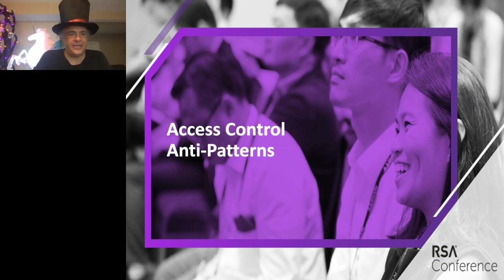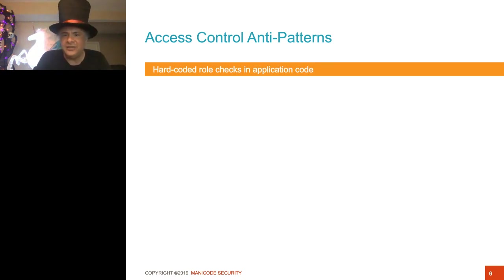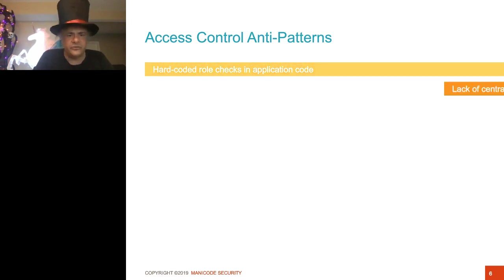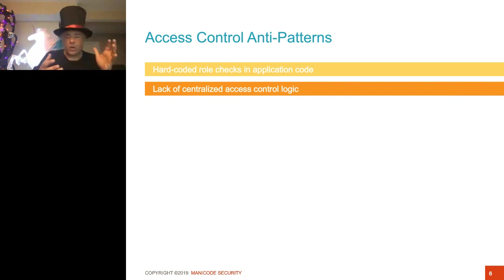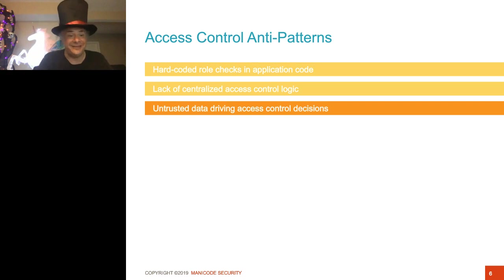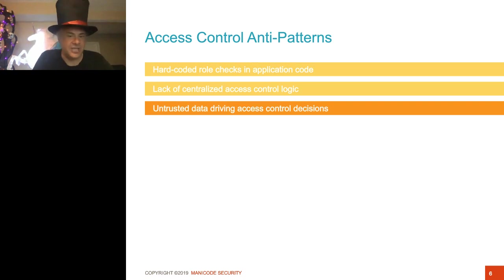Here are the anti-patterns I care about. Number one: the number one pattern you need to avoid in software is hard-coding roles in your code. Every language and framework not only supports this, they often encourage it. It's a way to get started easily with access control as a developer, and you get it working right away, but it's fragile and has lots of problems. I'm also concerned about access control that's not centralized — hard-coded all throughout your software, as opposed to having a centralized enforcement point. I'm also worried about the wrong data driving access control decisions, like untrusted data that an attacker could taint.